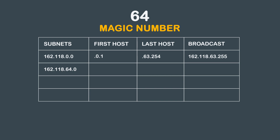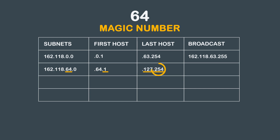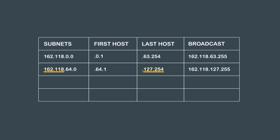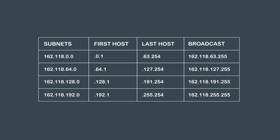The first host for this subnet is 162.118.64.1. To find the last host on this subnet, we again take the octet of concern, add the magic number to it, and then subtract 1: 64 plus 64 minus 1 equals 127. We will use 254 in the last octet to account for the broadcast address. Our last host is 162.118.64.254. Our broadcast is 162.118.127.255. Repeating this process for the last two subnets, all of our valid subnets are now in the chart. The answer to question 4 is 162.118.0.0, 162.118.64.0, 162.118.128.0, and 162.118.192.0.